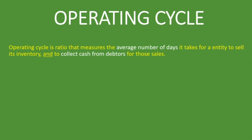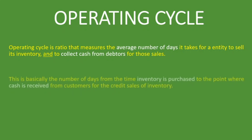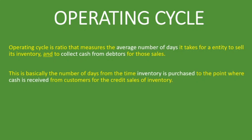So what is the operating cycle? The operating cycle is a ratio that measures the average number of days it takes for an entity to sell its inventory and to collect cash from debtors for those sales. This is basically the number of days from the time inventory is purchased to the point where cash is received from customers for the credit sales of inventory.